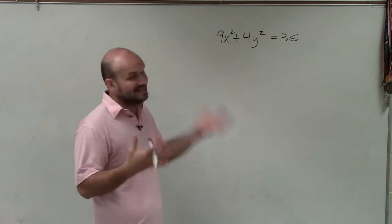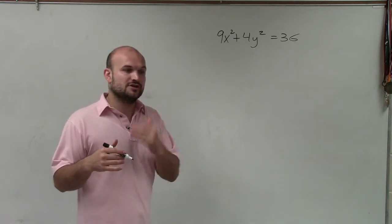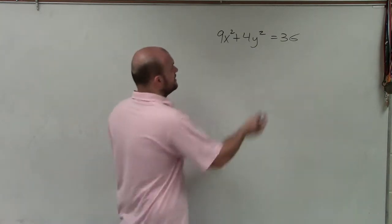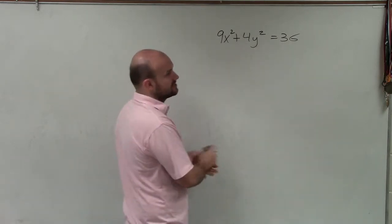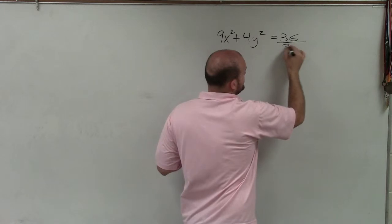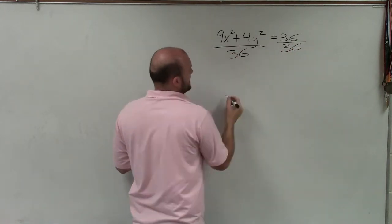But the first thing we want to do is get it at least into that standard form so we can determine where a and b are going to be. So all of our equations for ellipse are equal to 1. And this is equal to 36. So I need to get rid of the 36. So I will divide by 36 on both sides.